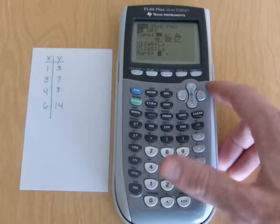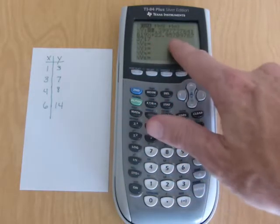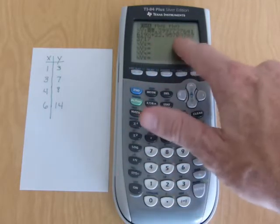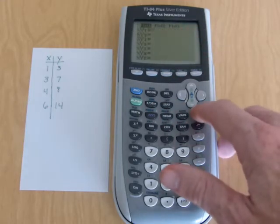Now, there's one other thing I want to check first. I want to make sure I don't have any equations in here. So I've hit the Y equals button. You can see I already have an equation up there. I'm going to clear that out.